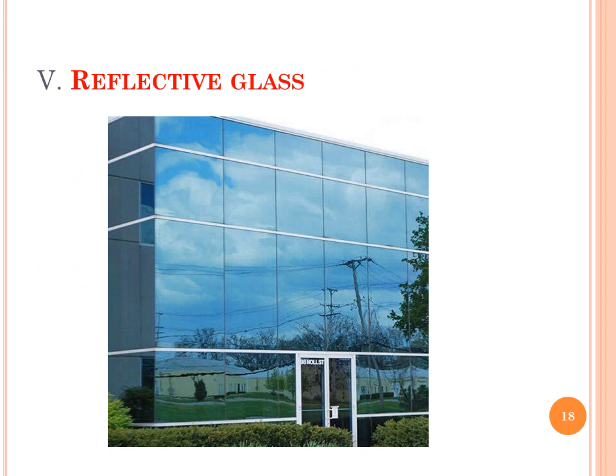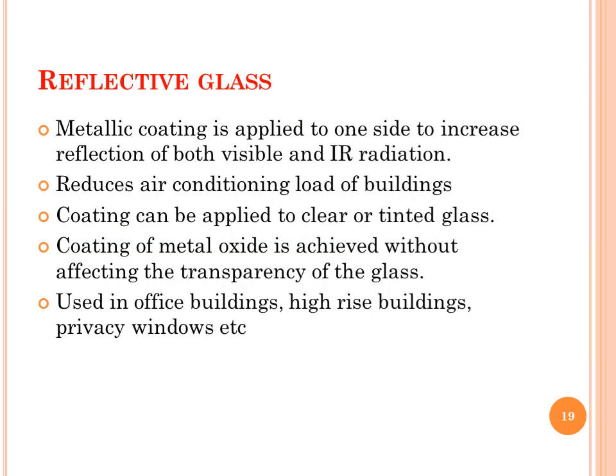Next type of architectural glass is reflective glass. It has a metallic coating applied to one side to increase the reflection of both visible and infrared radiation. It reduces the air conditioning load of buildings. The coating can be applied to clear or tinted glass. Coating of metal oxide is achieved without affecting the transparency of the glass. It is mainly used in office buildings, high-rise buildings, privacy windows, etc.